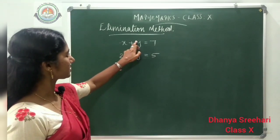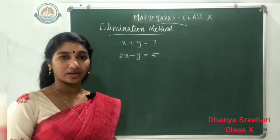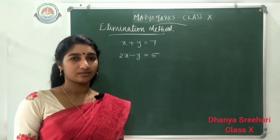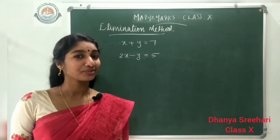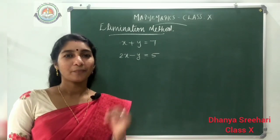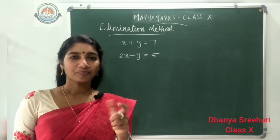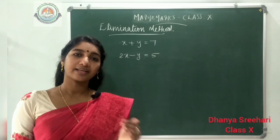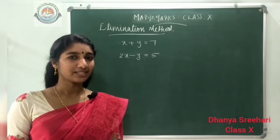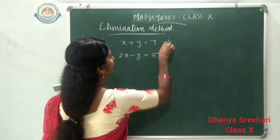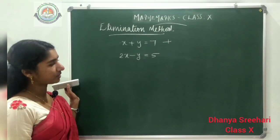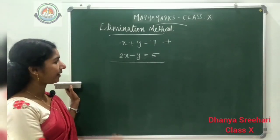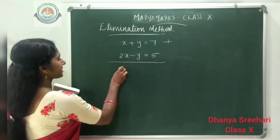Now see the coefficients of y. This is plus 1 and this is minus 1. What operation will make it 0 when we have plus 1 and minus 1? If you add those two values, it will become 0, because plus 1 plus minus 1 equals 0 — they are negatives of each other. One number plus its negative makes 0. So we can add these two equations. Equation 1 and equation 2 we are adding — direct addition only.